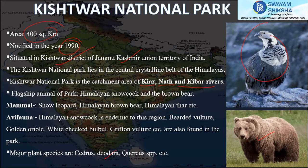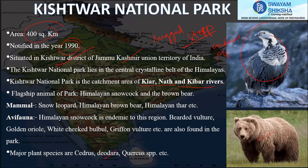The rivers of Kishtwar flow from north to southwest, merging with the Marwar River and finally joining the Chenab River just above Kishtwar town, which is why the park has these important catchment areas. The terrain is completely rugged and steep, and the vegetation is coniferous alpine with various pine species present.